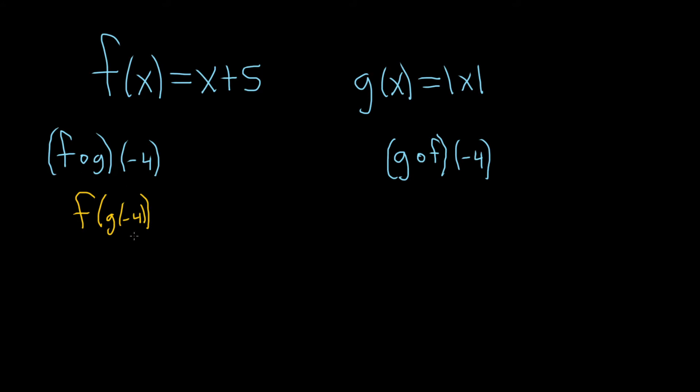So now let's go to the side and let's work out this inside piece g of negative 4. So g of negative 4 means we put a negative 4 where the x is in g. So it means we get the absolute value of negative 4 and the absolute value of negative 4 is 4.